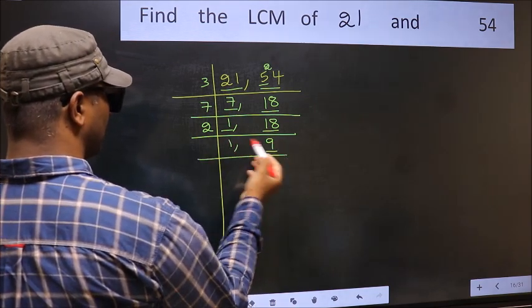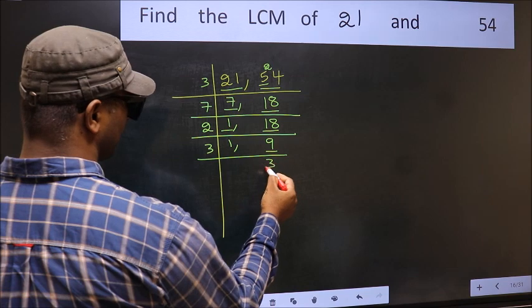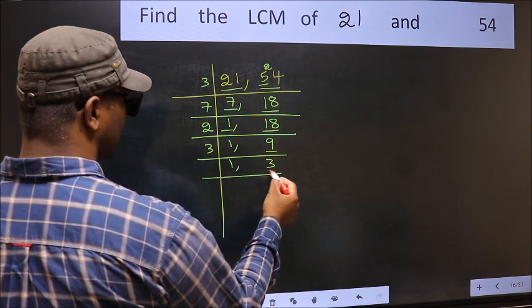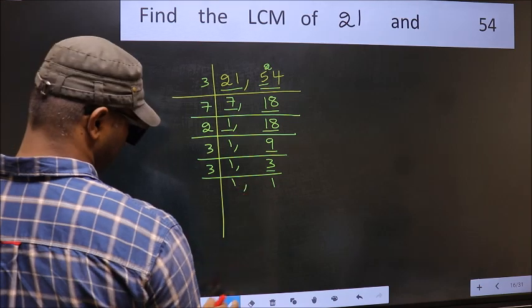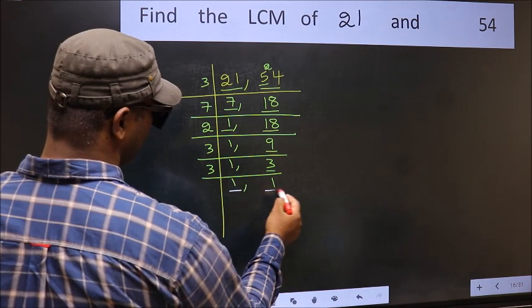Now here we have 9. 9 is 3, 3 is 9. Now we have 3, 3 is the prime number. So 3, 1 is 3. So we got 1 in both the places.